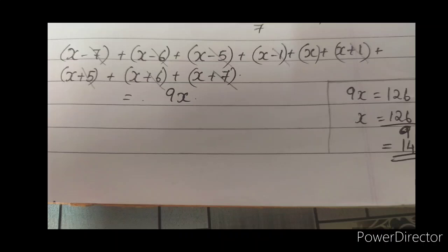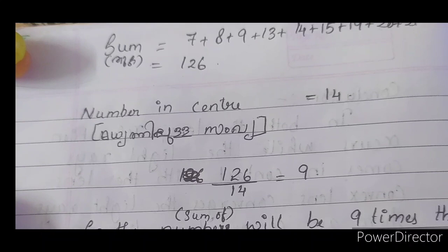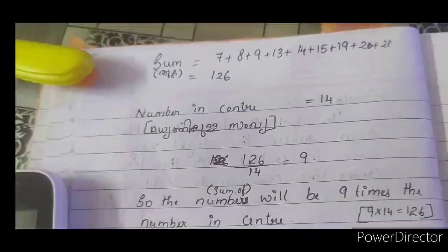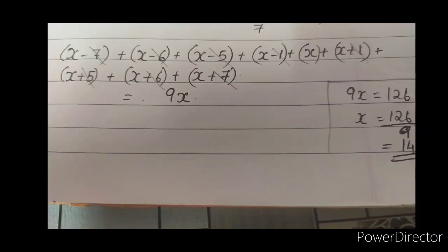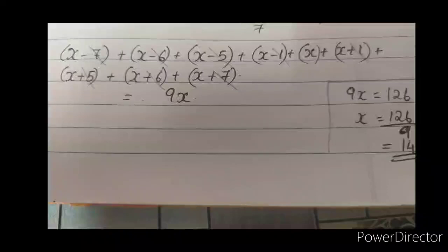9x equals 9 times x. So the answer is 9 times 14, which equals 126. Nine times 14 is 126. This confirms our result — the total sum is 9 times the central number.